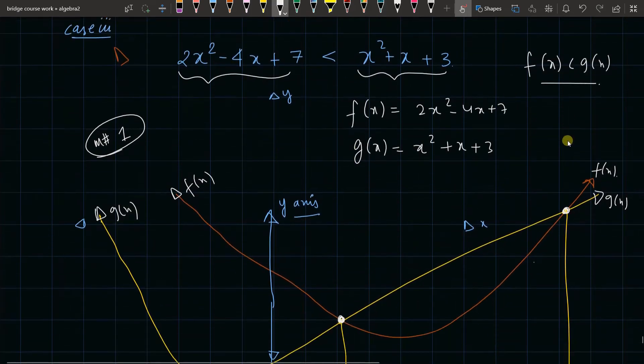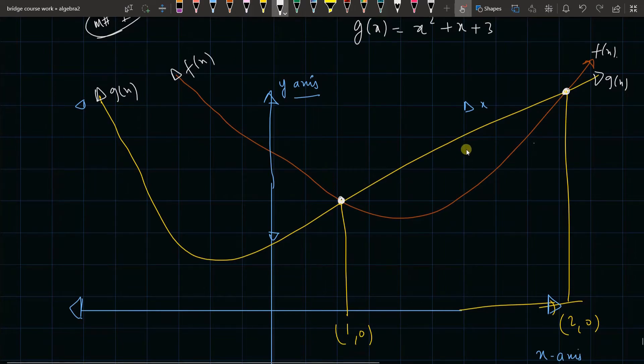The question is f(x) should be less than g(x). The brown graph is f(x), the yellow graph is g(x). Where is f(x) less than g(x)? f(x) is less than g(x) only in these places. So from 1 to 2, f(x) is less than g(x). All these places, it's clearly seen that f(x) is less than g(x). This is our f(x) and this is our g(x). Clearly, g(x) is above f(x).